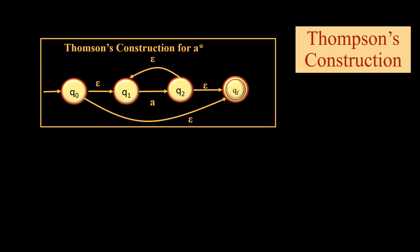As far as star is concerned, we have four epsilons: one from q0 directly to qf, one from q0 to q1, q2 to qf, and one back.